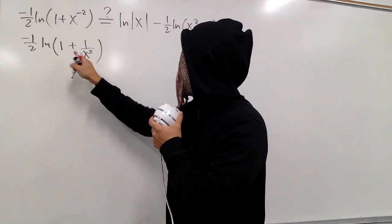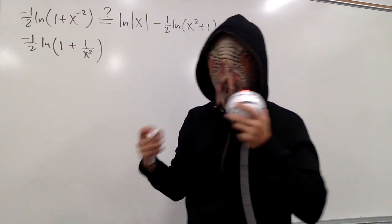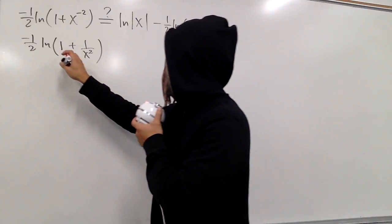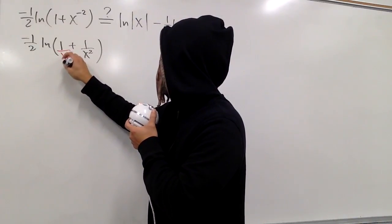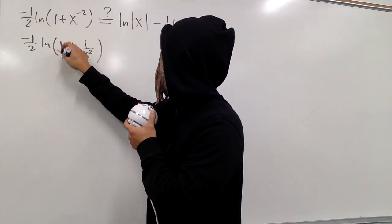As we can see inside here, we have 1 plus 1 over x squared. We can just get a common denominator, right? And that's going to be, you know, multiply this by x squared, and then do the same on the top.